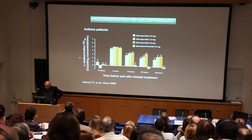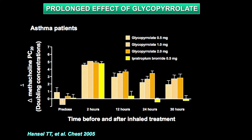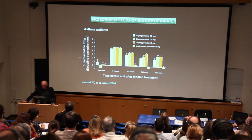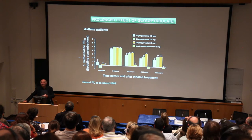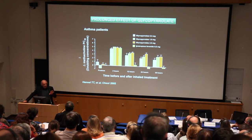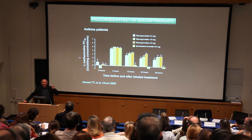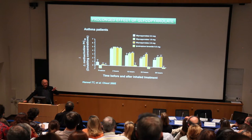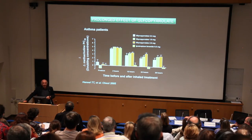This is a study that Trevor Hansel and I did several years ago, when we took glycopyrrolate, which had been around since the 1960s and was used by anesthetists to dry salivary secretions during general anesthesia. We put it in a nebulizer and gave it to people because we'd found in vitro that glycopyrrolate was associated with muscarinic receptors in human lung for a very long time, just like tiotropium. And we could see that it has a very long duration of action, exactly the same as tiotropium.